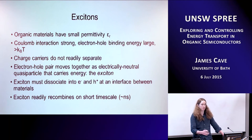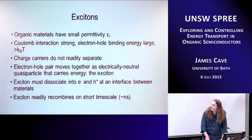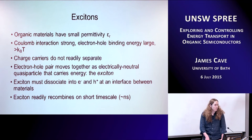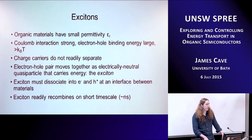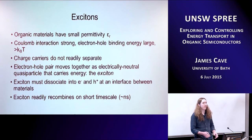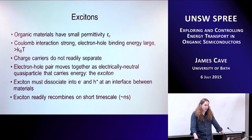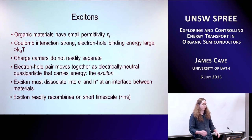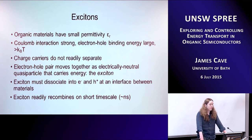I wasn't sure exactly how much people would know about organics, so I've put in a small aside on the slide. The issue with organic materials is they've got quite a small permittivity, and what that means is that you've got quite a strong Coulomb interaction. So when a photon is absorbed and produces an electron-hole pair, the charge carriers don't readily separate and drift-diffuse to the electrodes. You have to first split them apart yourself. They move around as what we call an exciton — an electron and a hole together, which is electrically neutral.